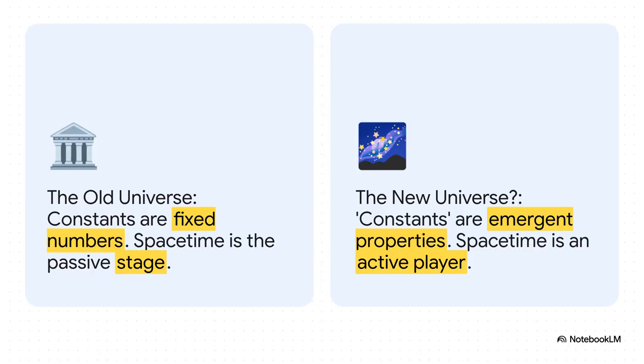This slide just perfectly captures the paradigm shift we're talking about. We would move from a universe where space-time is just a passive, boring stage for events to happen on, to one where it's an active, dynamic player. A universe where the fundamental constants are just emergent properties, kind of like how the temperature of a room emerges from the motion of countless little atoms.